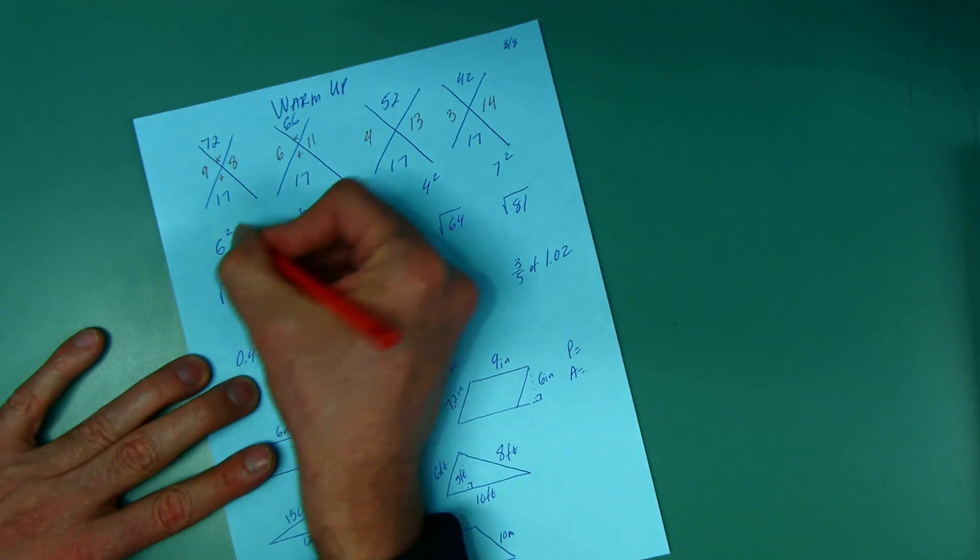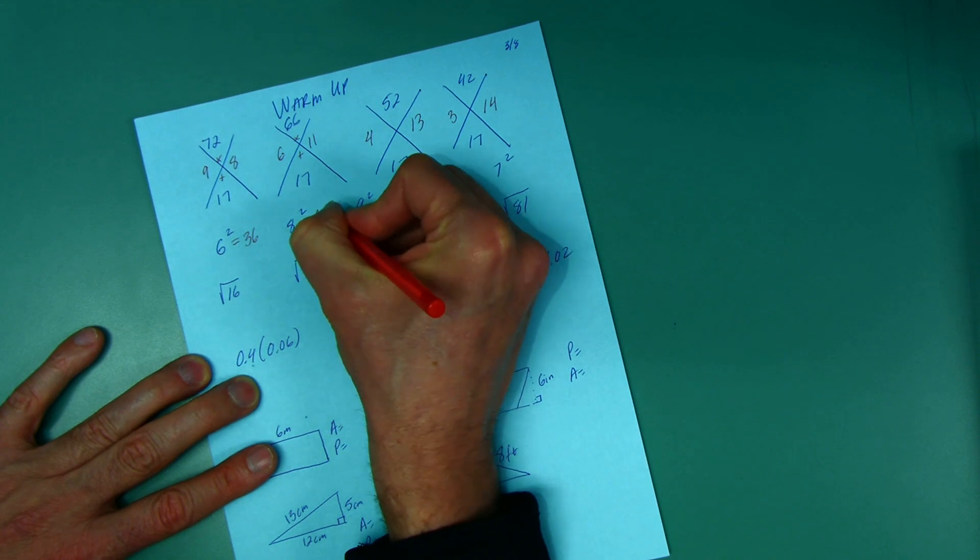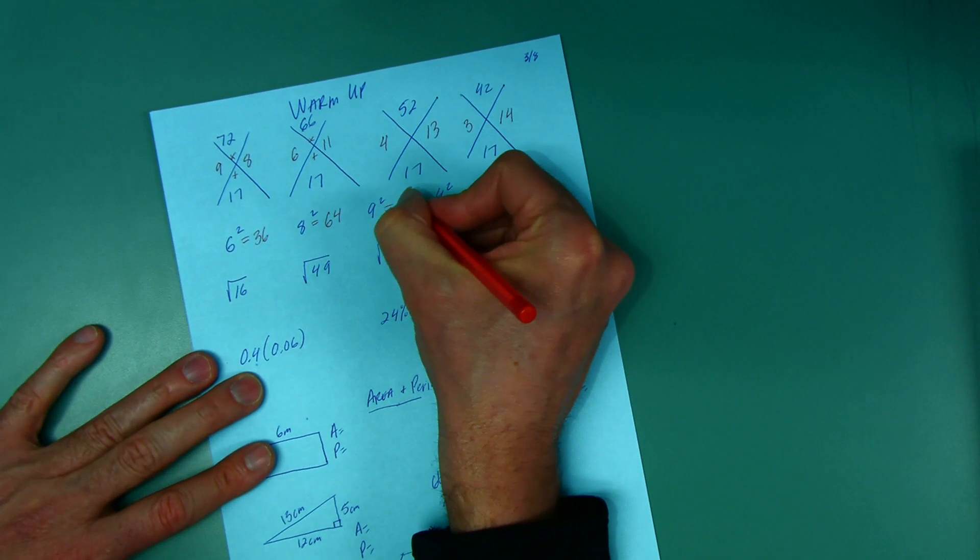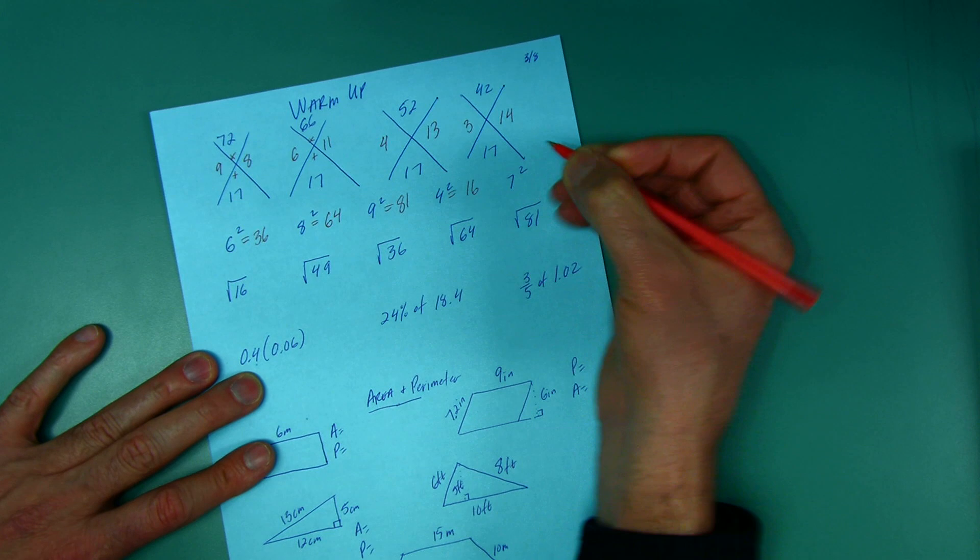All right, 6 to the second power, 6 squared is not 12, it's 6 times 6 is 36. 8 squared is 8 times 8 - fell on the floor, picked it up, it was 64. And 9 squared is not 18, it is 81. And 4 squared is not 8, it's 4 times 4, 16. And 7 squared is 49.